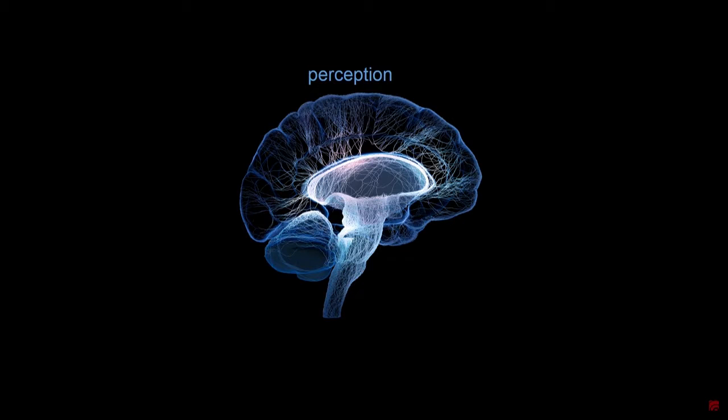This tells us something quite fundamental about perception. The idea is that perception is never a pure reflection of your sensory information, but it's always a combination of your expectations, your assumptions, the beliefs that you have, and the context that you're in. Perception is nothing else but a reinterpretation of sensory information according to your beliefs.